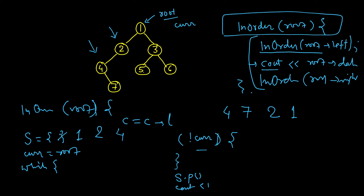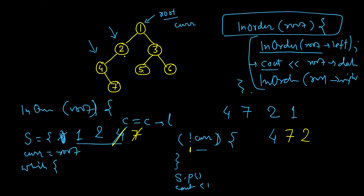In this case, current becomes null after pushing one, two, and four, so we print four after popping it. Four is gone from the stack, only one and two remain, and current becomes current's right which is seven. This loop will run till current is null, so we push seven into the stack and make current equal to its left which is null. Again current becomes null, so this loop ends and we pop seven and print seven. We make current equal to its right which is null, so again current is null. This loop will not execute at all — we again pop and now two will be popped and we print two. Current is now two's right, again null.